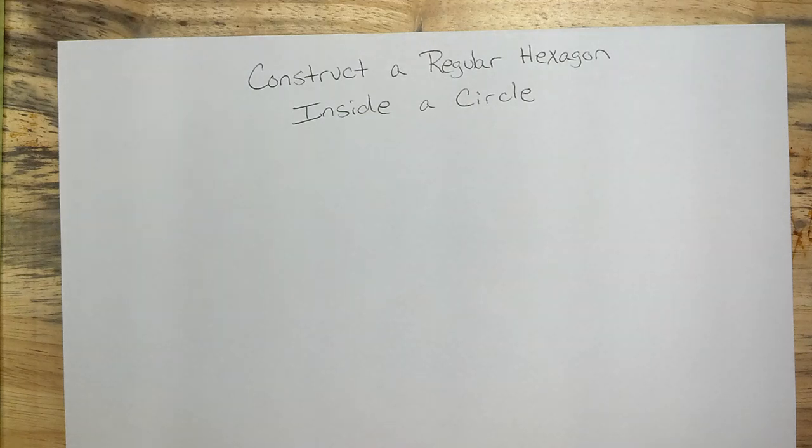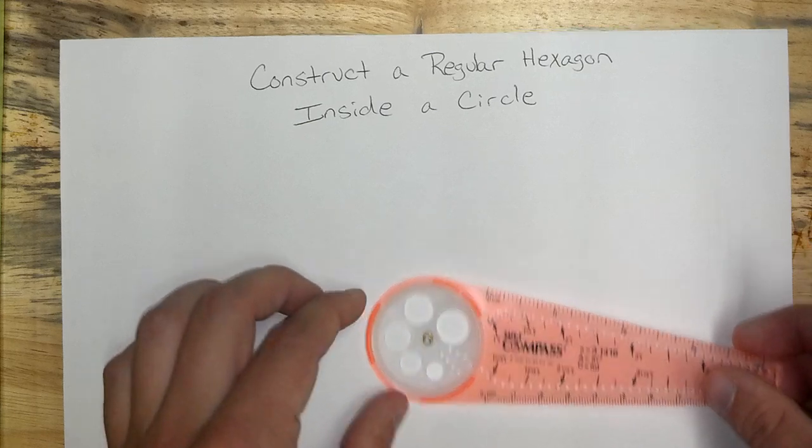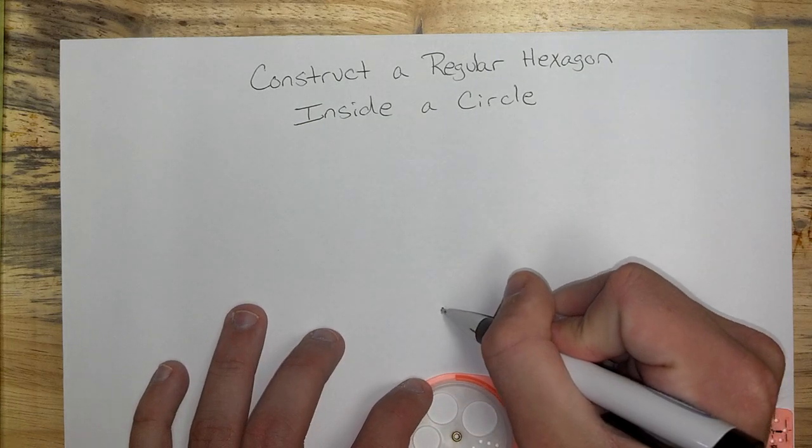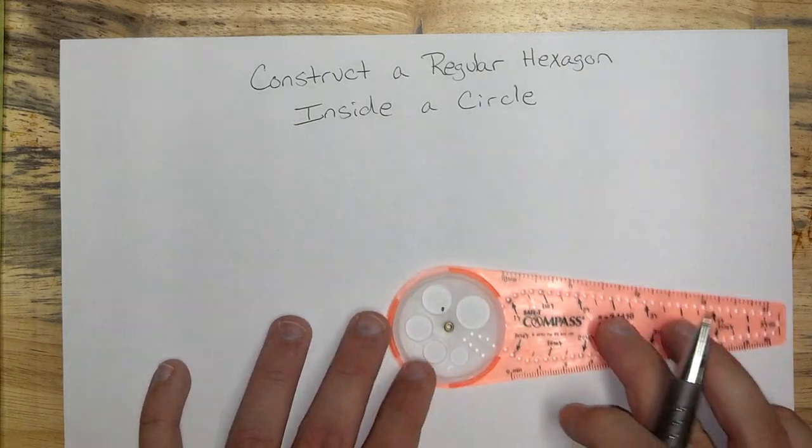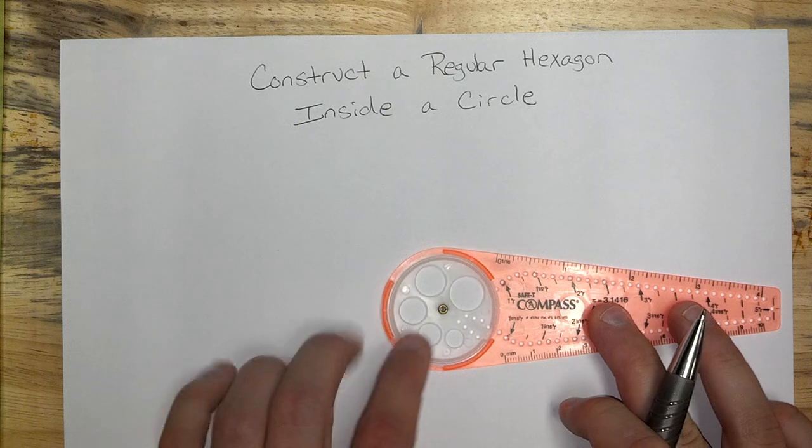To construct a regular hexagon inside of a circle, first we need a circle. So go ahead and create a center for your circle, and then make the circle.